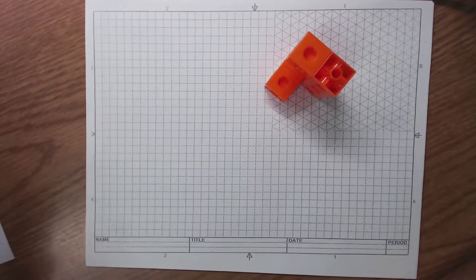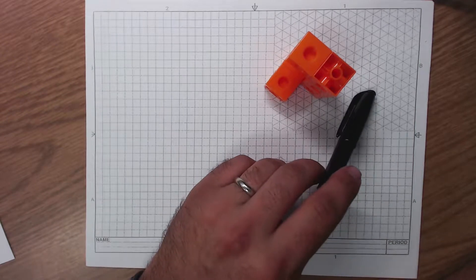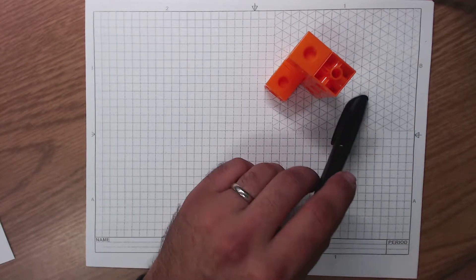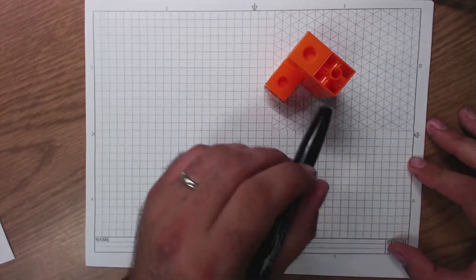Hey everybody, I'm Mr. Hartster and I want to talk to you in this video about doing some multi-view sketches. That involves doing some isometric drawing and doing a top, front, and right face of that part.